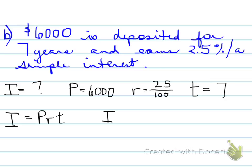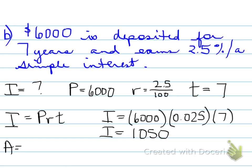Plug it in the formula, I equals 6,000 times 0.025 and times 7, and you end up with a value of $1,050. So the total final amount, how much it's worth, will be the principal plus the interest, which will be a grand sum total of $7,050.